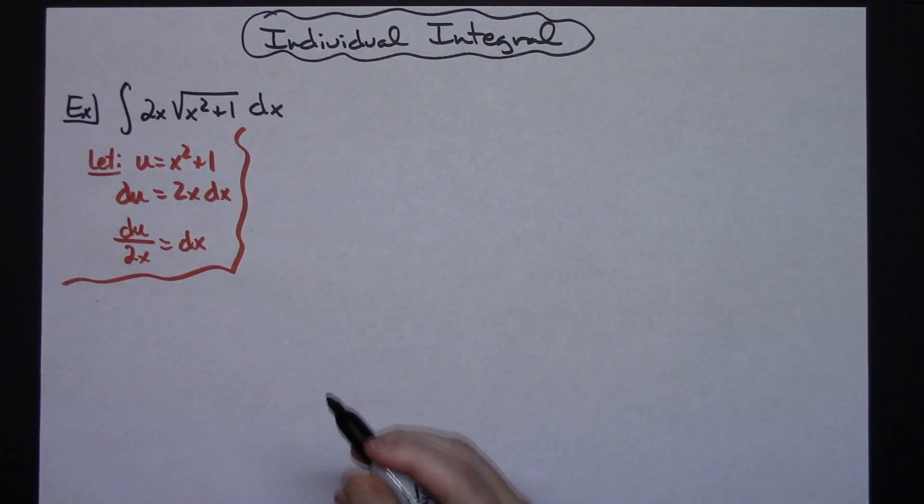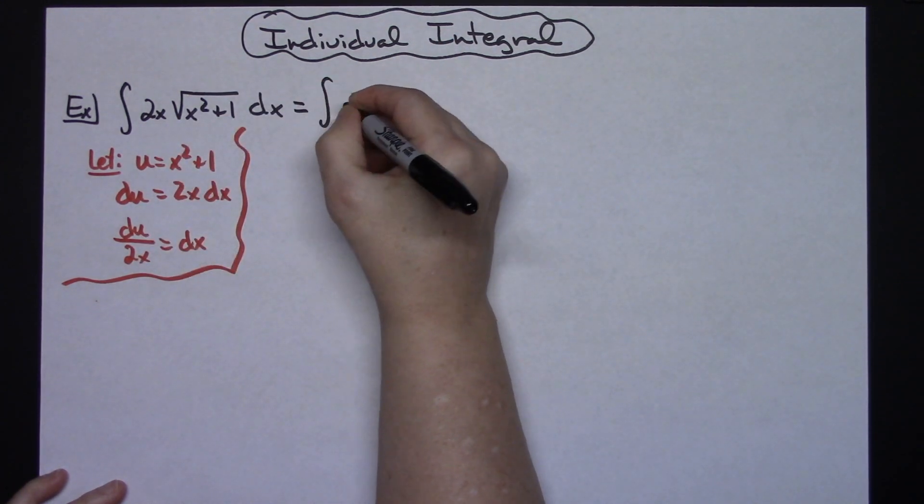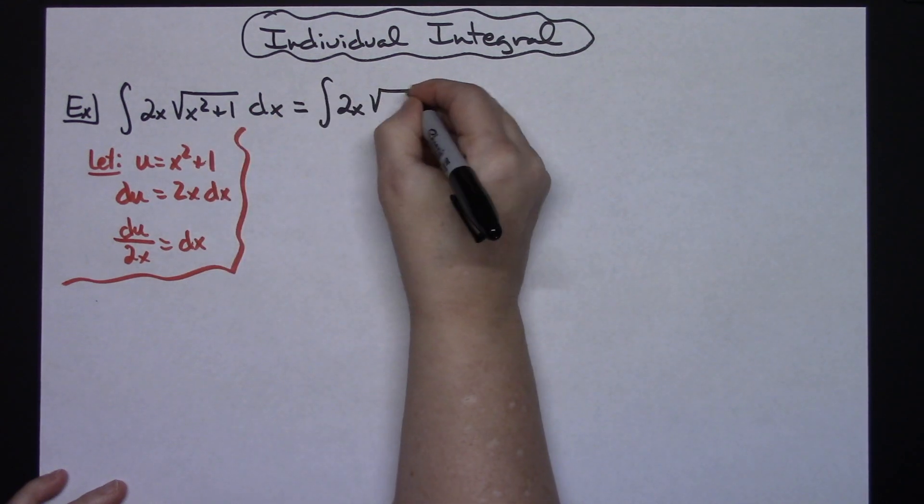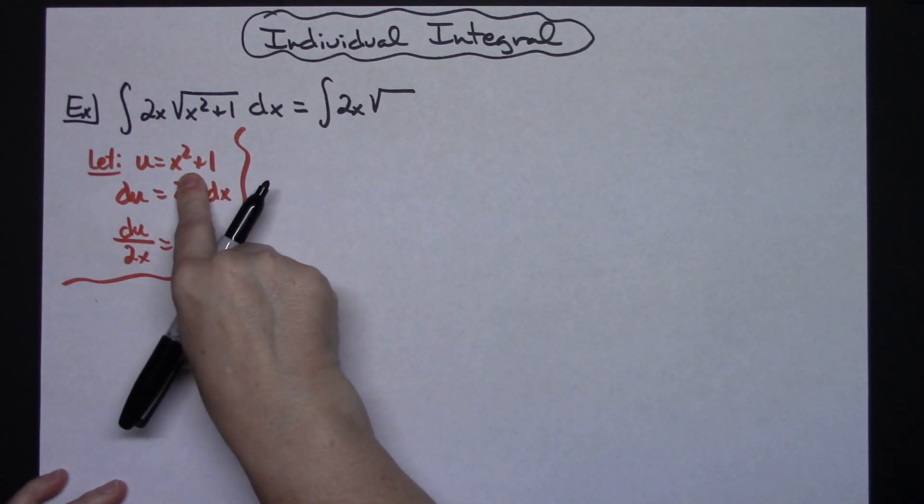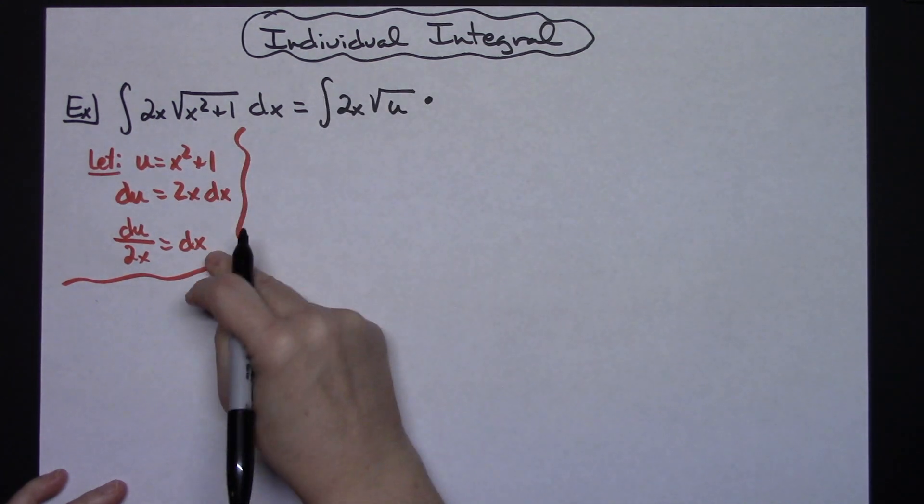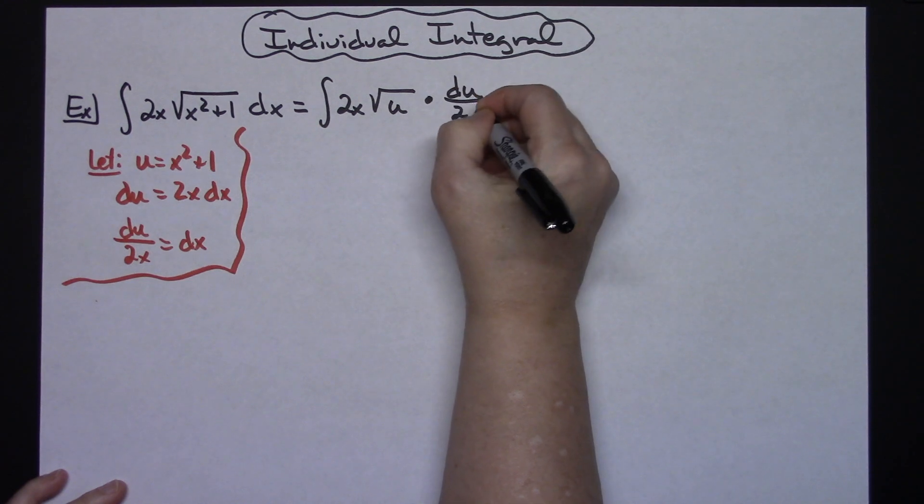Alright, I'm going to come back up to my original integral and I'm going to substitute things. So I'll have the integral, we're going to have the 2x will still be there. I'm going to have the square root of, now for x squared plus 1 I'm going to put in my u, and for the dx I'm going to replace it with du over 2x.